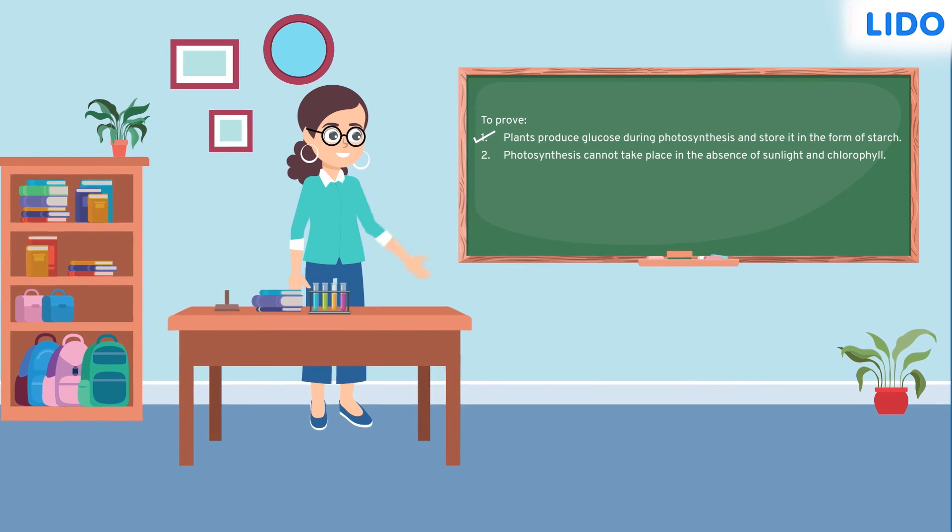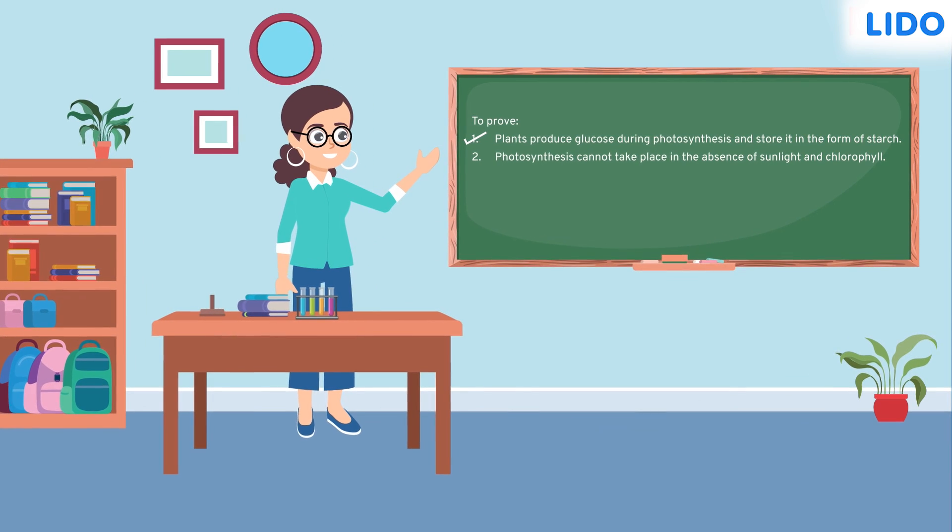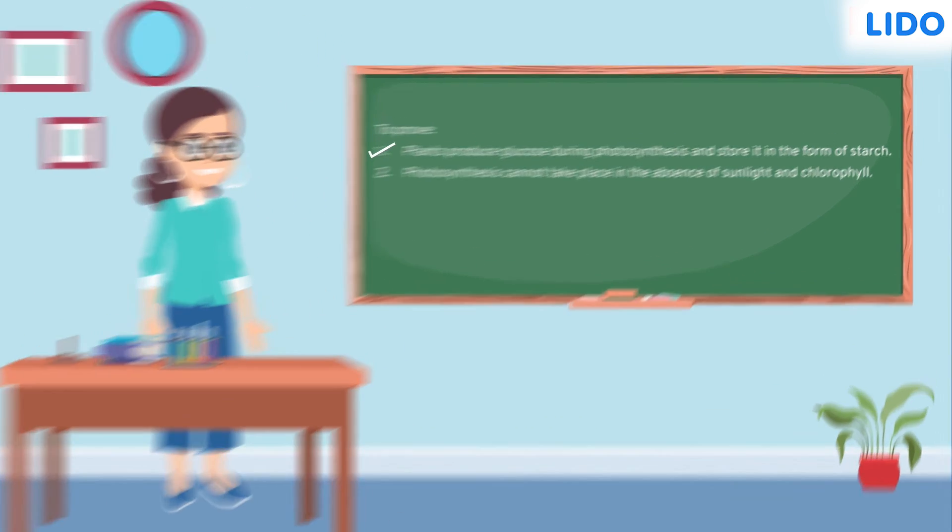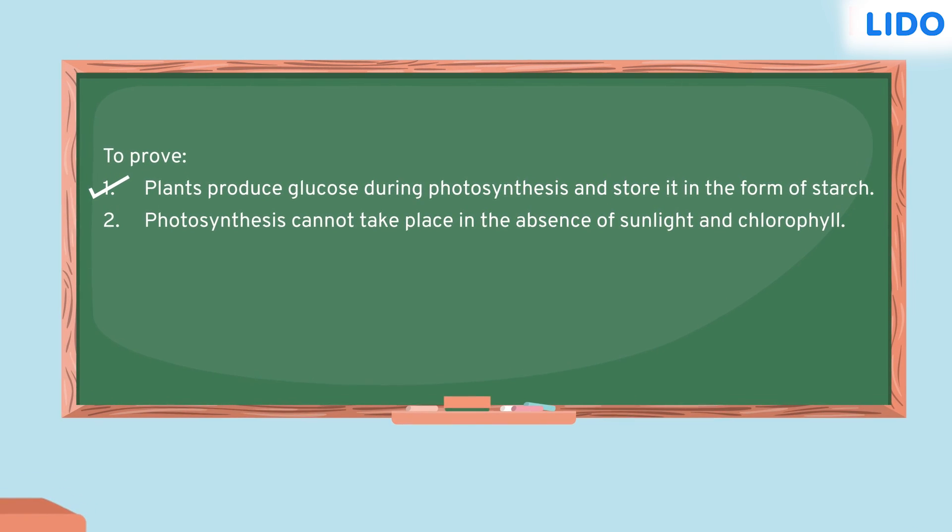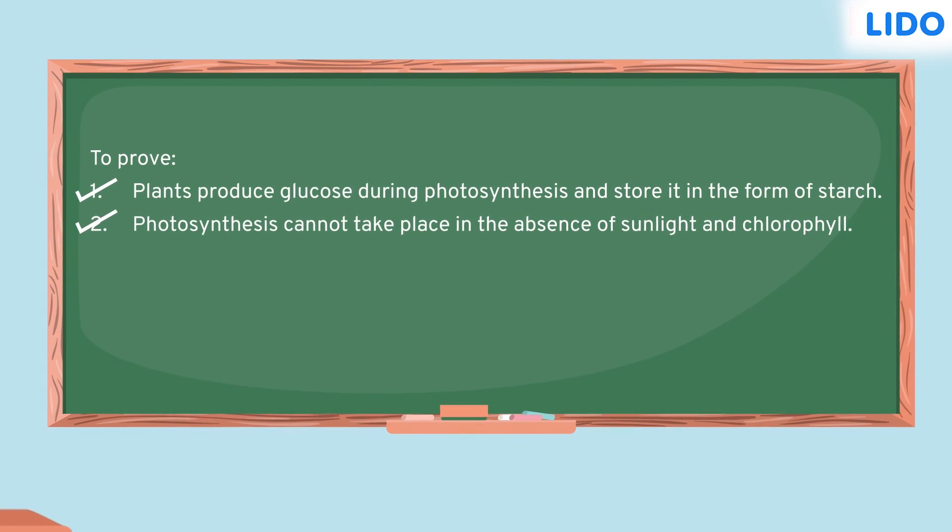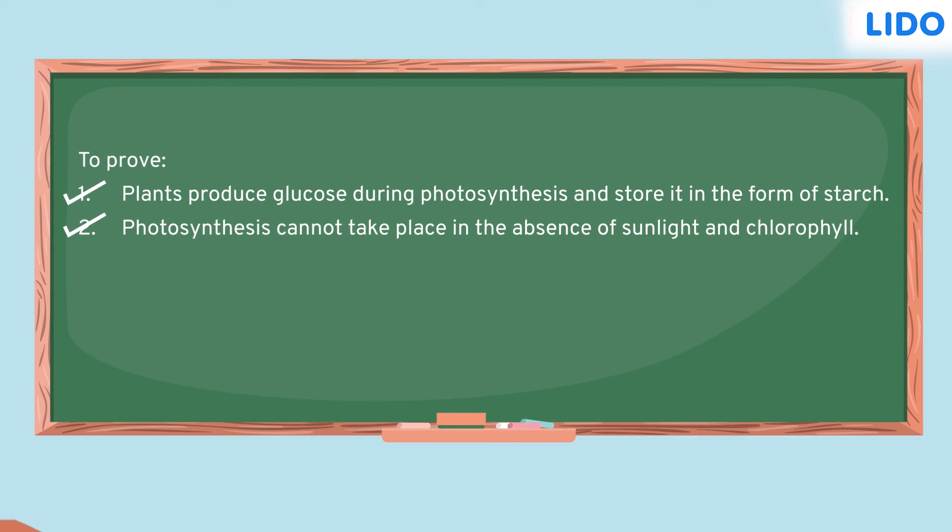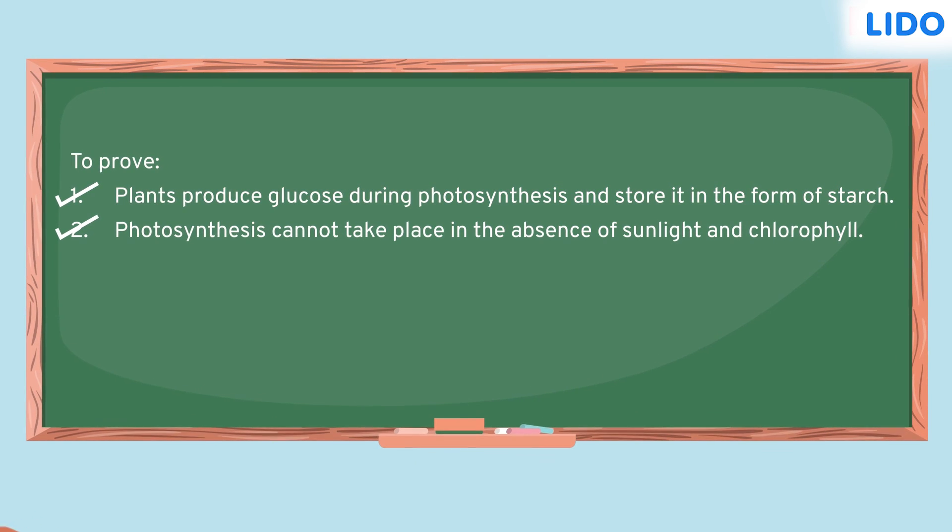So, Sapna learnt that photosynthesis is an actual process in which plants produce glucose and store it in the form of starch. And also, that photosynthesis cannot take place in the absence of sunlight and chlorophyll.